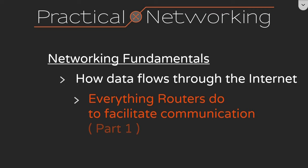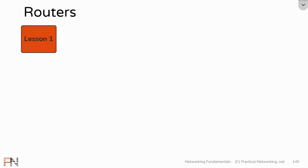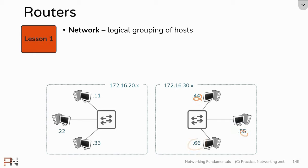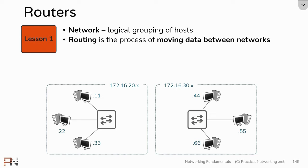Before watching this lesson, it is recommended to have watched the prior lessons in this series. In Lesson 1, we discussed the concept of networks. We defined them as a logical grouping of hosts. We mentioned that each network has its own IP address space, and each host has an IP address in that network's IP address space. We also defined switching as the process of moving data within networks, and then we defined routing as the process of moving data between networks.